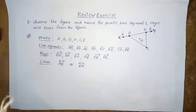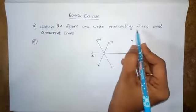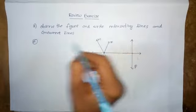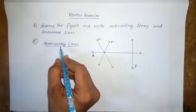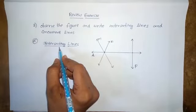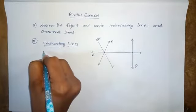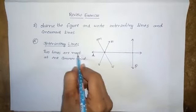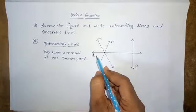This is the solution for the first problem. Next, problem two in the review exercise: observe the figure and write the intersecting lines and concurrent lines. Intersecting lines means two lines that meet at one common point.